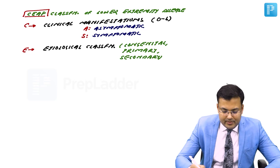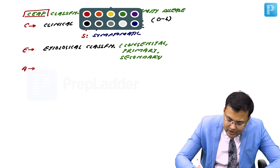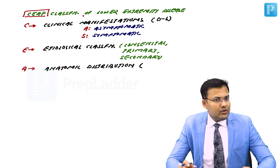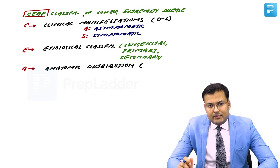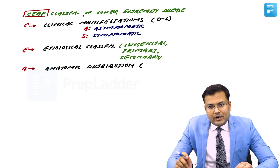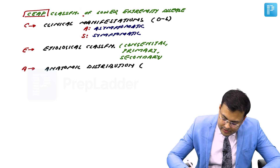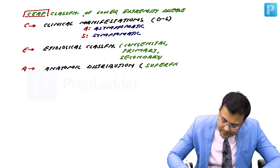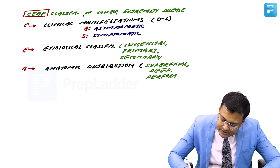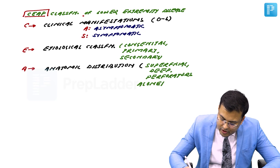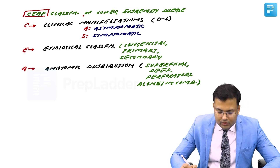A is anatomical distribution. Here you can see which system is involved — whether there is involvement of only the superficial system, the deep system, or perforators. These systems can be involved alone or in combination, so anatomical distribution captures that.